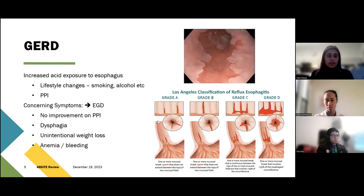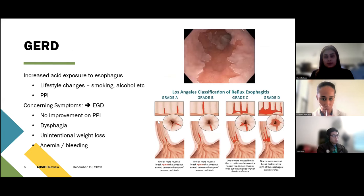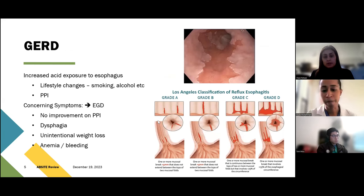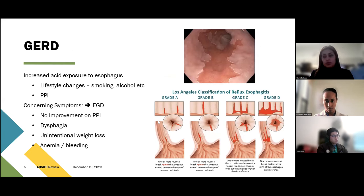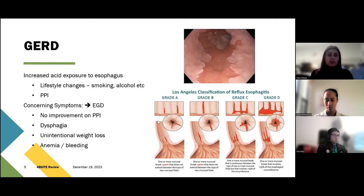Moving on, we're going to talk about gastroesophageal reflux disease, a super common topic. It's due to increased acid exposure to the esophagus. Most commonly we start with lifestyle changes — stopping smoking, decreasing alcohol use — and the mainstay of management is PPIs. Warning symptoms that indicate you need to work this up further include: being on PPI for a while without improvement, more dysphagia, unintentional weight loss, or anemia and bleeding. For those, you would do an EGD.